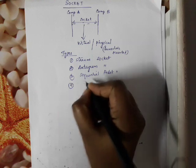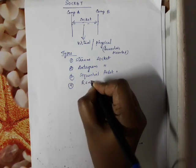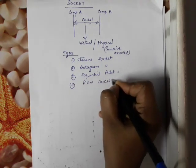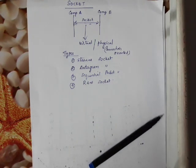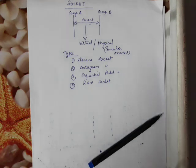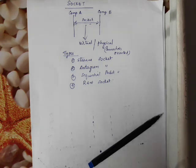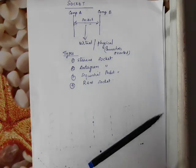The fourth type is Raw Socket. Raw socket is used in the internet. We use the raw device for communication. It uses two-way communication. The data length is fixed, similar to sequential packet socket.